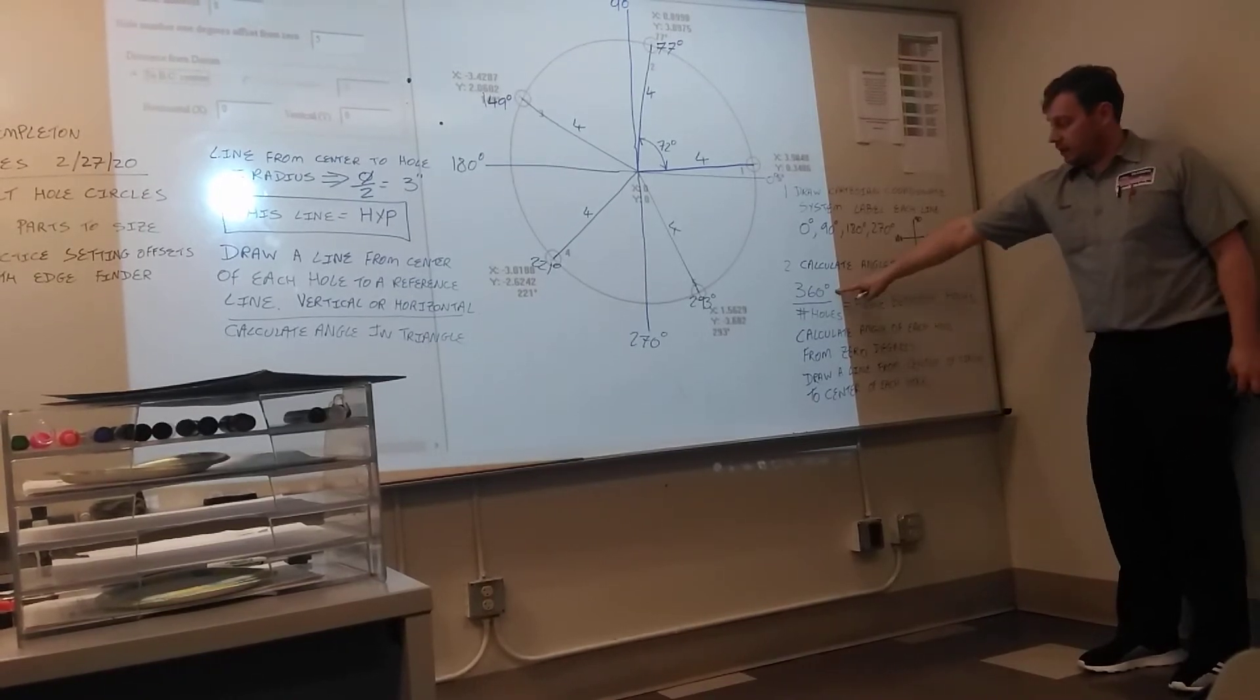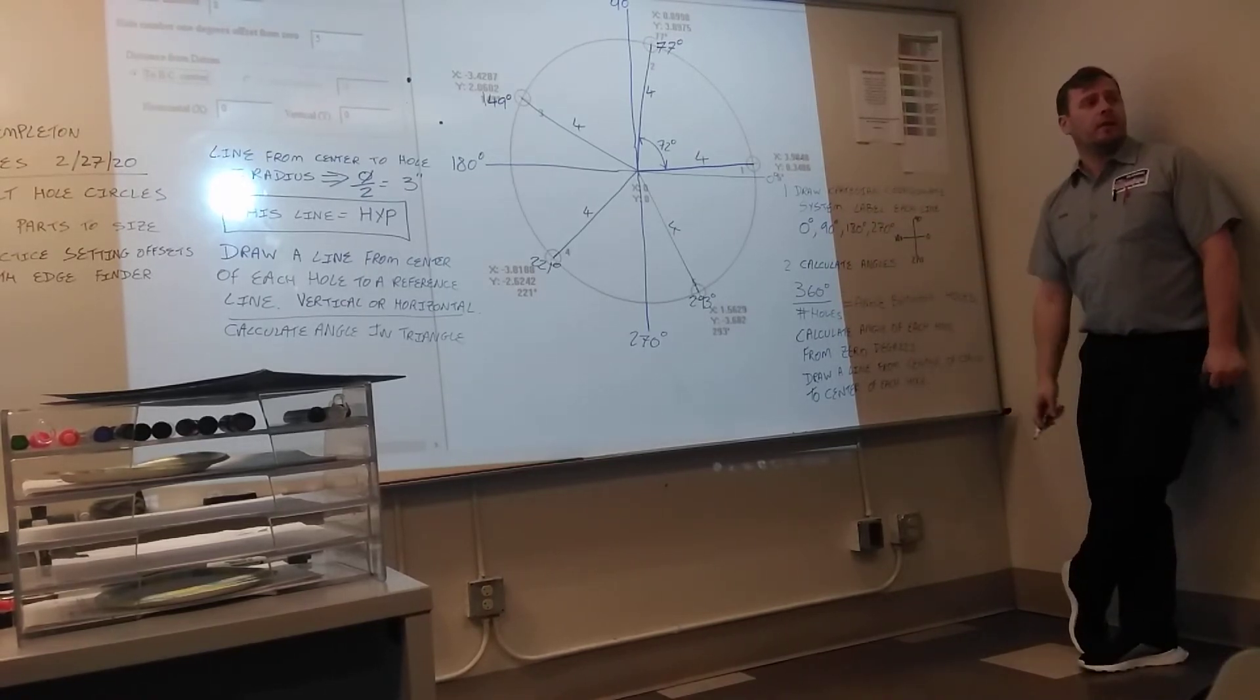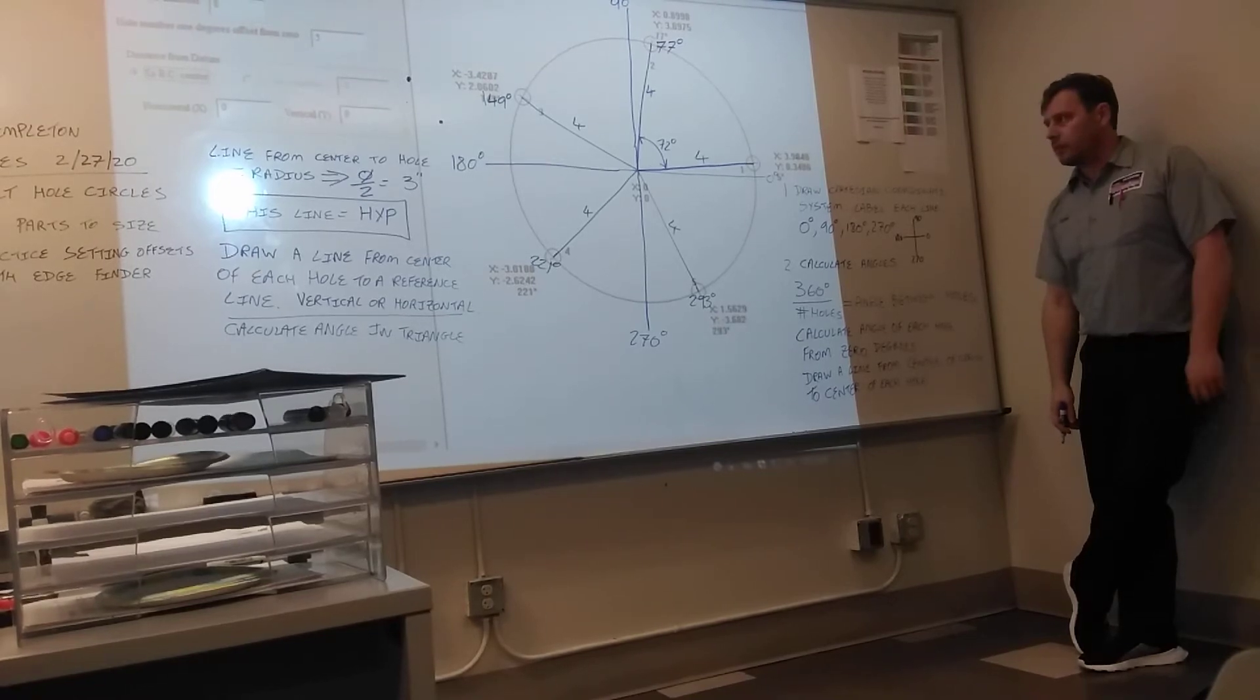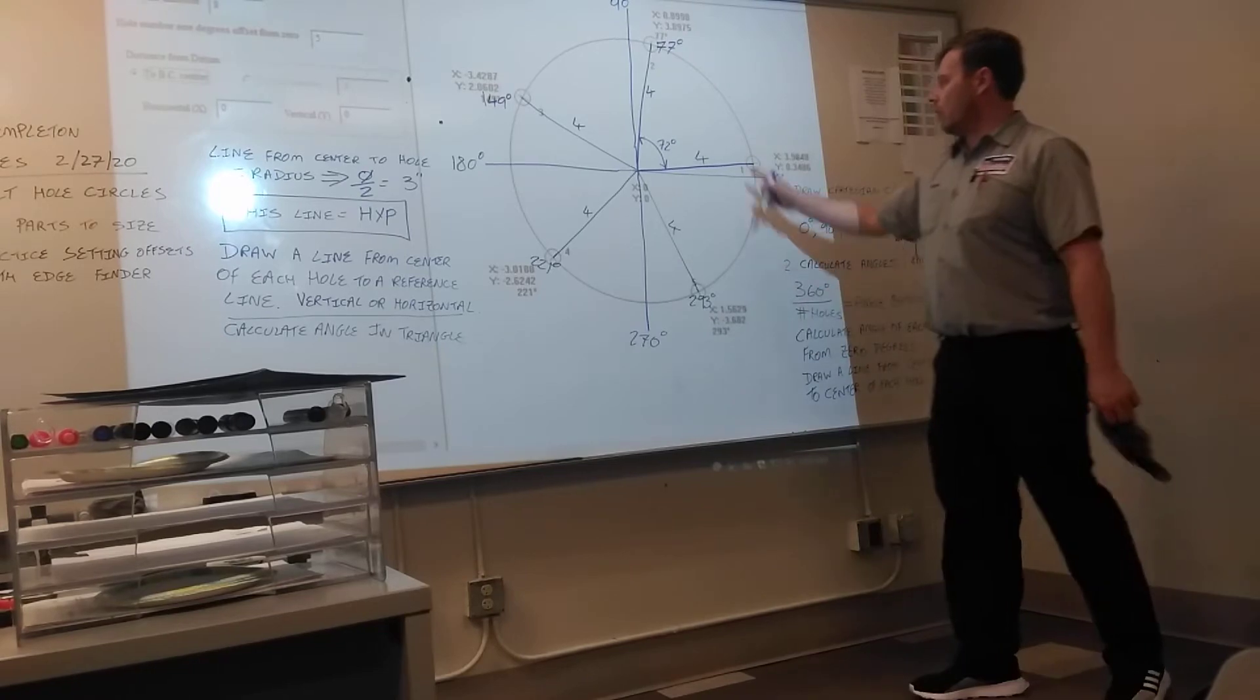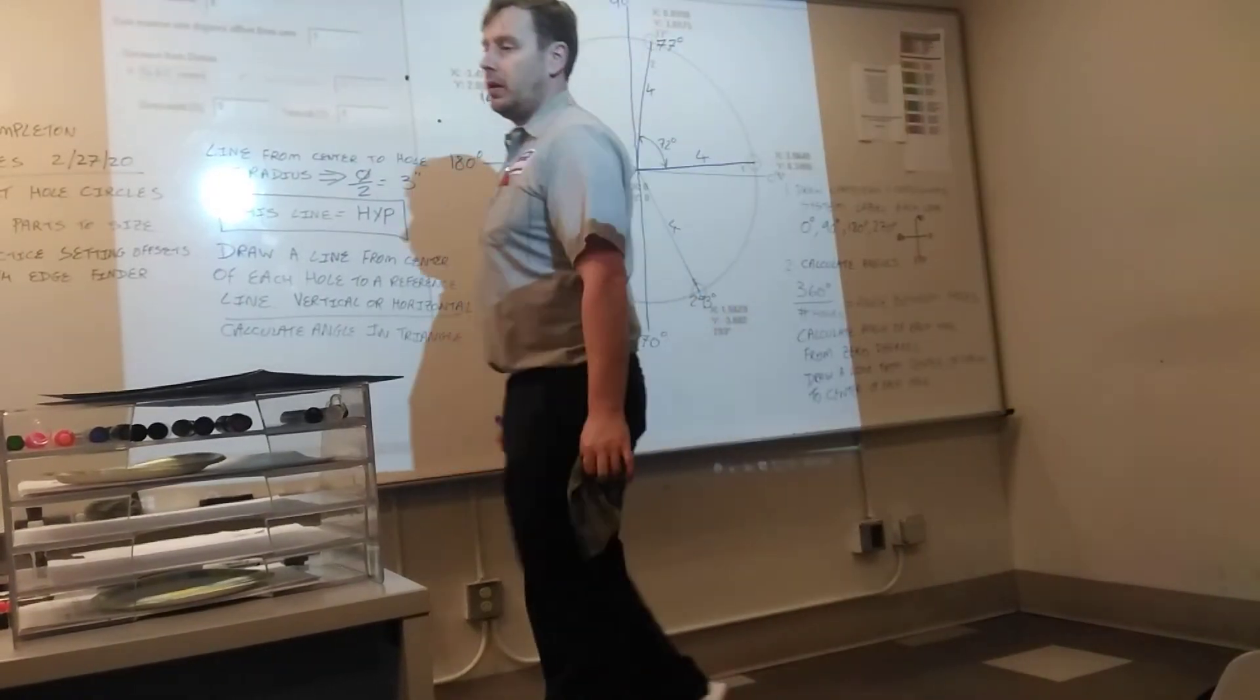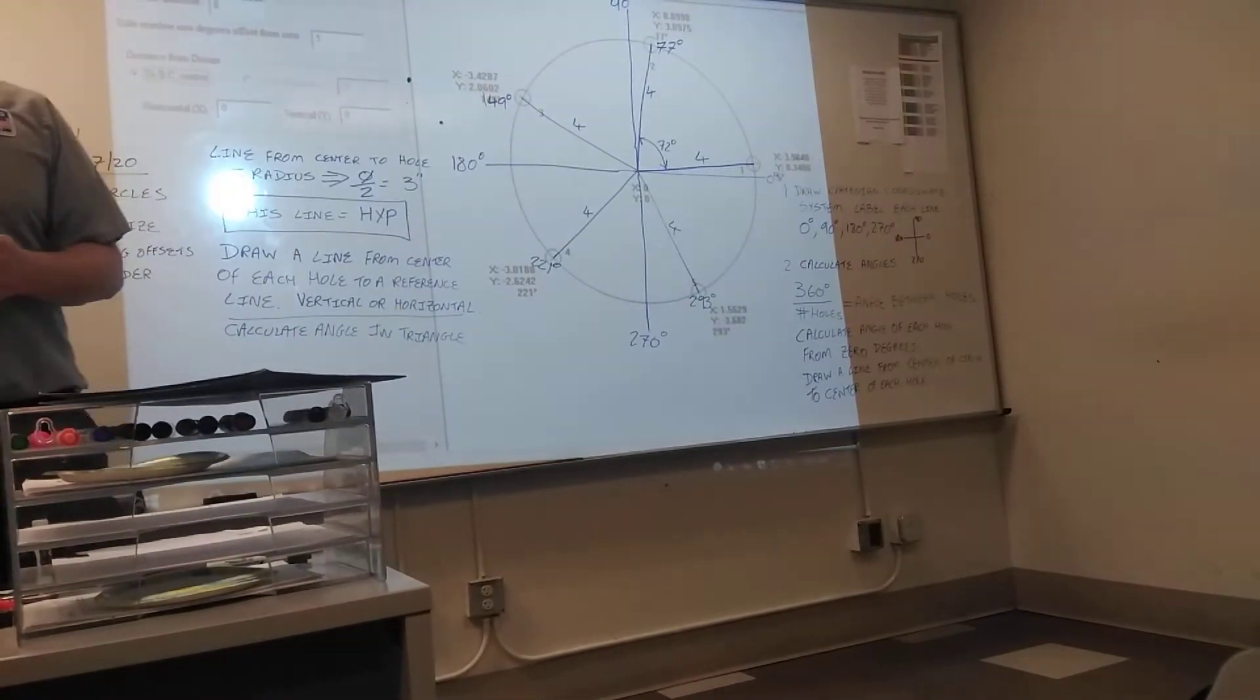360 divided by the number of holes. So how many holes do we have? Five. Three-sixty divided by 5. Seventy-two degrees. Draw a line from the center of the circle to the center of each hole. That gives you the radius. Take the diameter, divide it by two. That gives us four.